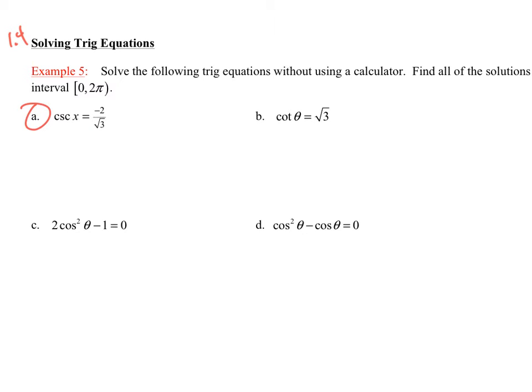If you remember, cosecant is the same thing as one over the sine. So if I reciprocate this, this would be sine of x is equal to negative square root of three over two.